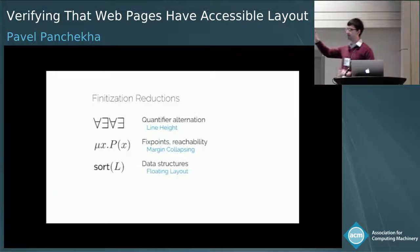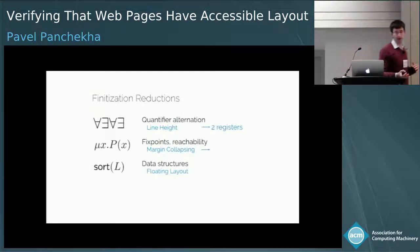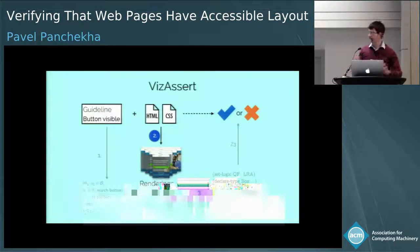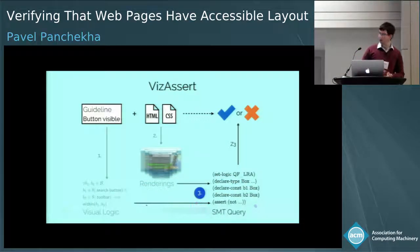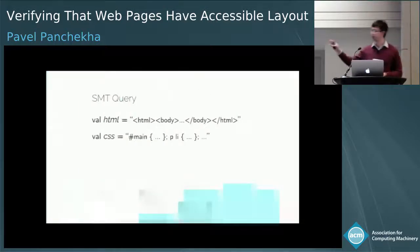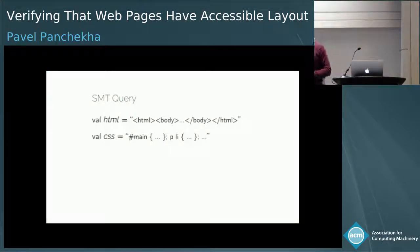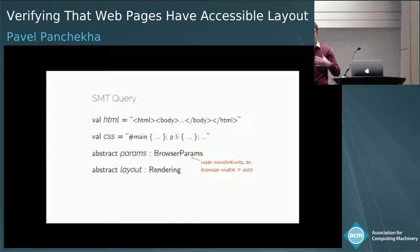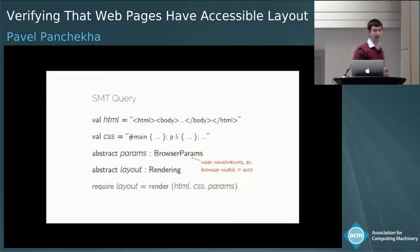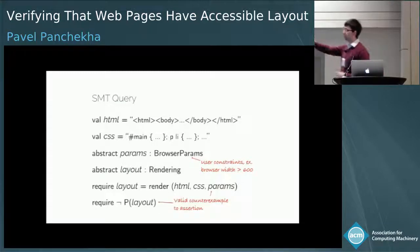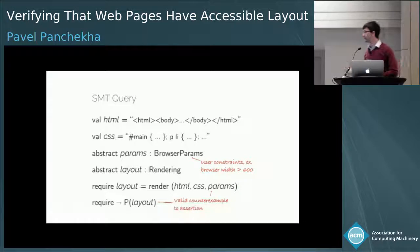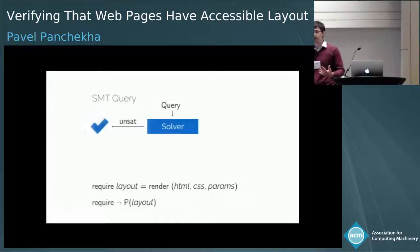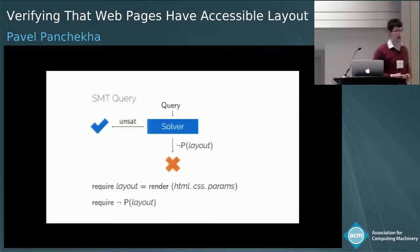What I've described is how we've taken these complex logical features and found equivalent ways of representing the same semantics using simple, finite operations on basic data types. Now let me tell you how we encode this all to an SMT query. At a high level, we introduce the HTML and CSS that defines the web page as a structured representation, introduce an abstract set of rendering parameters with user constraints, and an abstract layout. We ensure that layout is a valid counterexample by requiring that it is both a rendering of the page and fails to satisfy the assertion. The solver will either give us unsat — meaning no counterexamples, the page is valid — or a counterexample to return to the user.